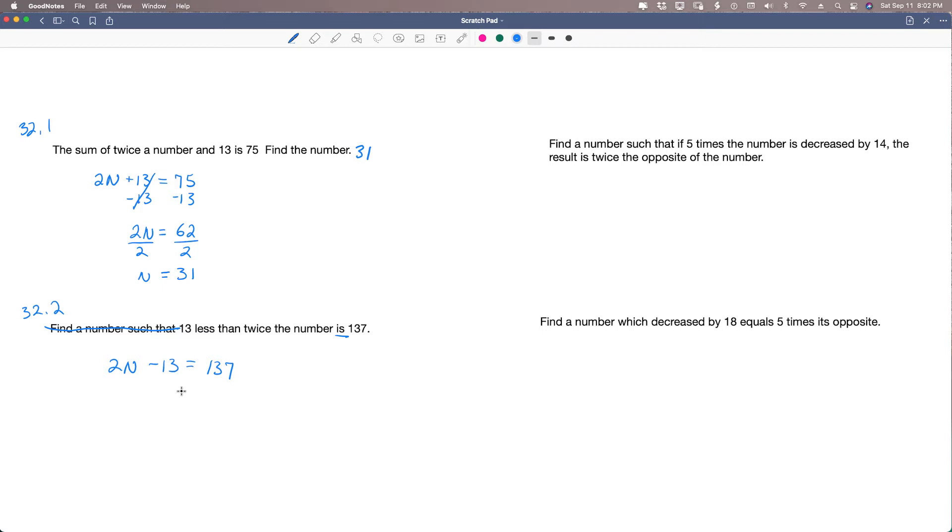Now we can solve. We can add 13 to both sides and swim our little fishies around. This cancels. That leaves 2n on this side, and that leaves 150 on this side. And when we divide both sides by 2, n is equal to 75. So 75 is the answer to this problem.